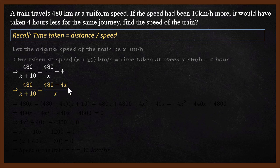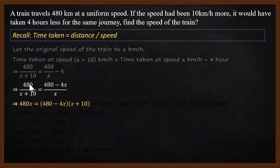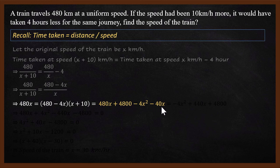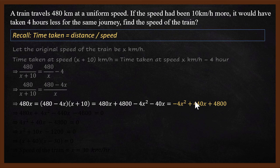Basically cross-multiply. We get 480x on the left. The right-hand side becomes 480 multiplied by x, plus 480 multiplied by 10 which is 4800, minus 4x squared, minus 4x multiplied by 10 which is minus 40x. Simplifying 480x minus 40x gives 440x, so we have minus 4x squared plus 440x plus 4800.